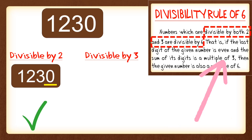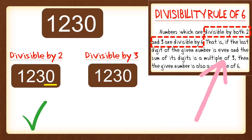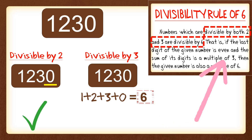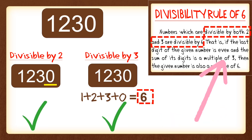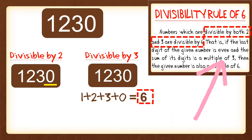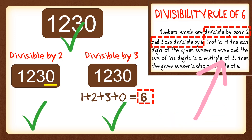Now let's check if 1,230 is divisible by 3. To determine divisibility by 3, we get the sum of its digits, and it should be a multiple of 3. The sum of the digits is 1 plus 2 plus 3 plus 0, which equals 6. Since 6 is a multiple of 3, that means 1,230 is divisible by 3. Since 1,230 is divisible by both 2 and 3, we can determine it is also divisible by 6.